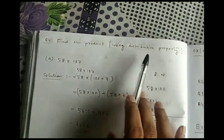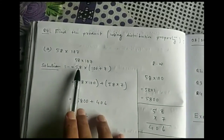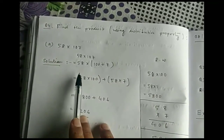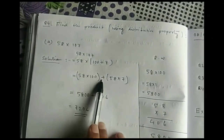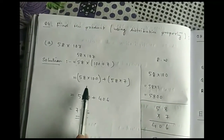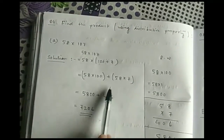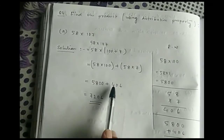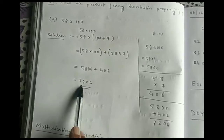Question 4: find the product using distributive property — 58 into 107. The solution: 58 into 107 can be expressed as 58 into (100 plus 7). First we multiply 58 into 100 to get 5800, then we add 58 into 7 which is 406. Adding 5800 plus 406 gives us 6206, which is the answer.